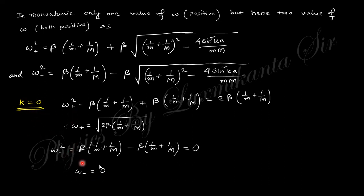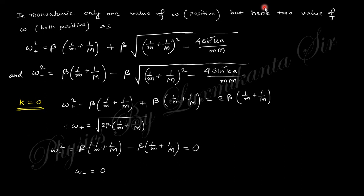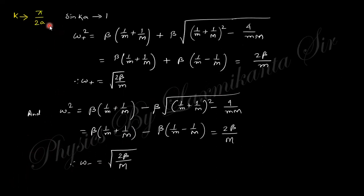At k = 0: ω₊ equals its corresponding value and ω₋ = 0. As k tends to 0, ω₋ also tends to 0. To find the limiting value, we use sin(θ) ≈ θ for small θ. Applying this and using the binomial expansion, we find ω₋ is proportional to k at small k values. At k = π/(2a), when the argument equals 1, we obtain specific formulas for both ω₊ and ω₋.